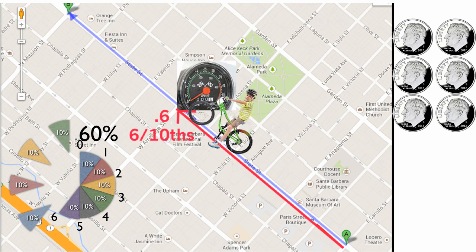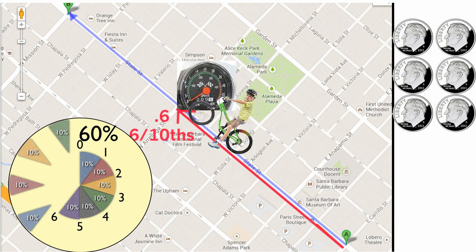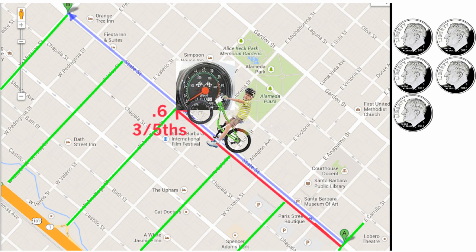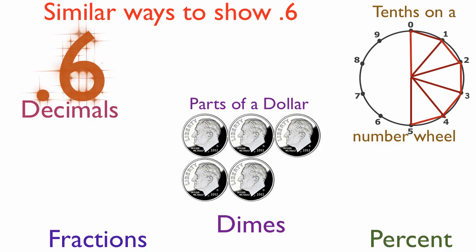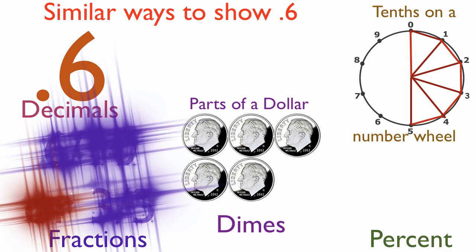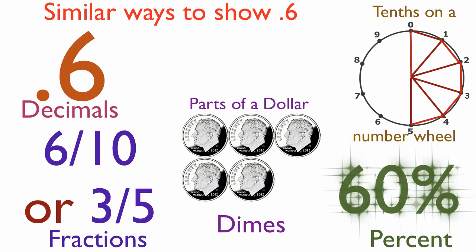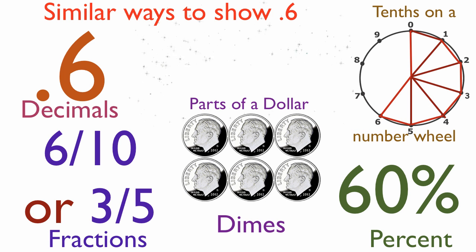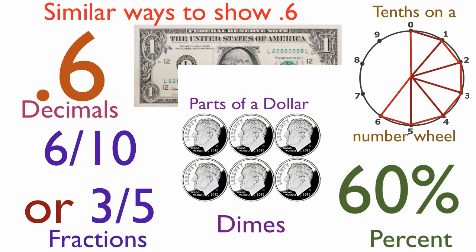Chris goes forward to the sixth block and picks up a sixth dime. Now, look at the green lines. He has now gone three of the five two-block chunks. Chris has gone to 0.6, or six-tenths, or three-fifths, or 60% of a mile, and to six on the number line, or to six dimes, which is six-tenths of a dollar. I hope this is getting easier and clearer for you.